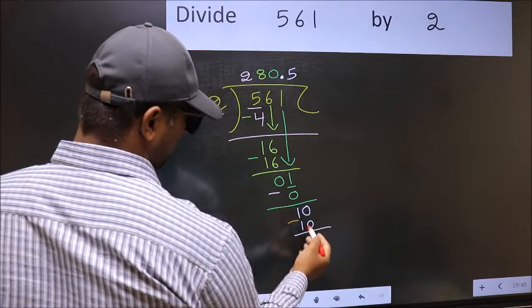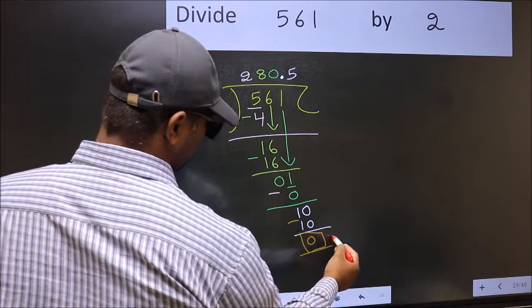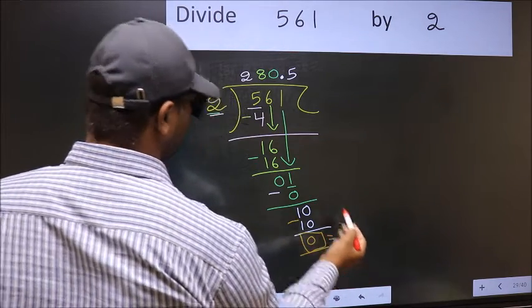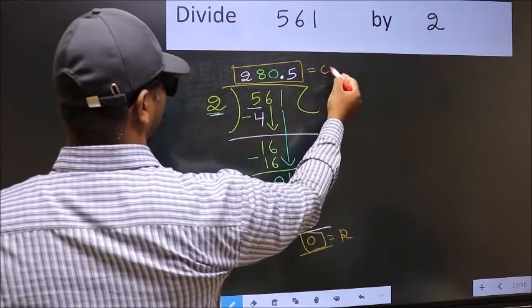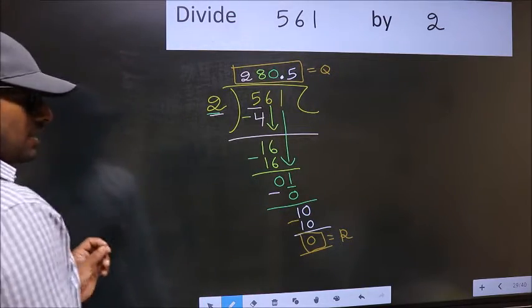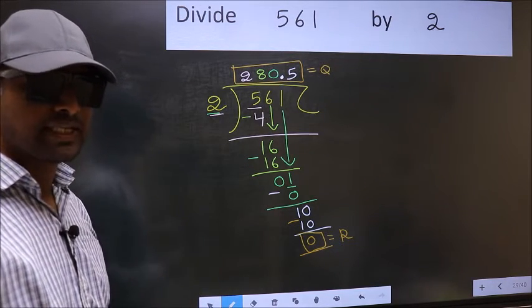Now you subtract. 10-10, 0. So this is our remainder and this is our quotient. Did you understand where the mistake happens? You should not do that mistake.